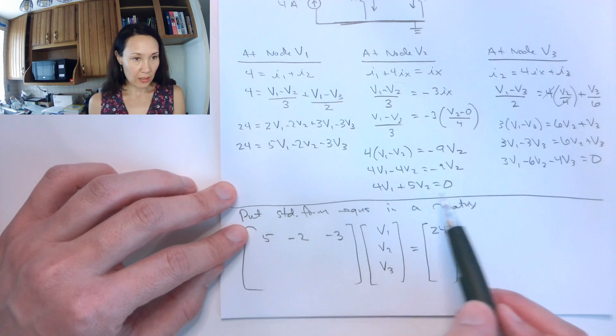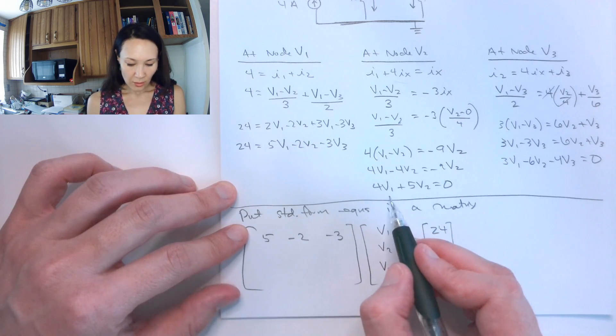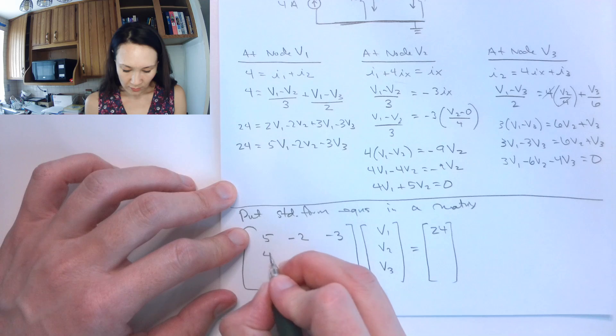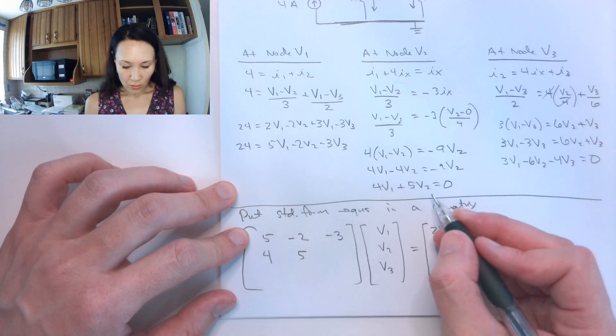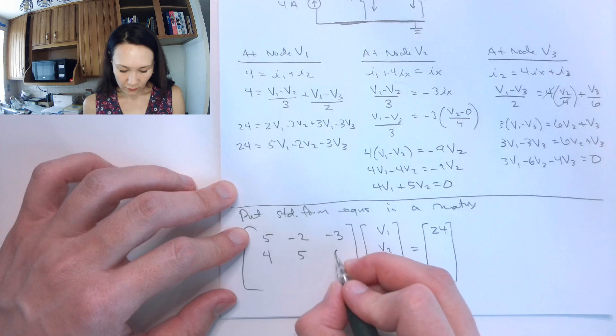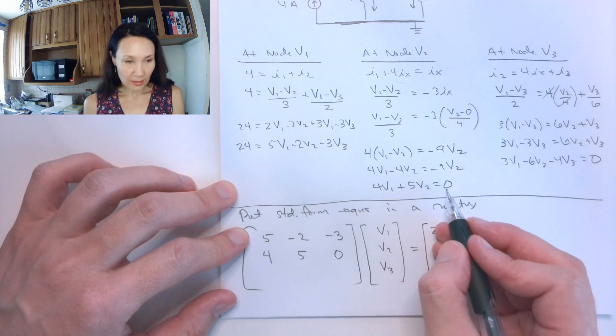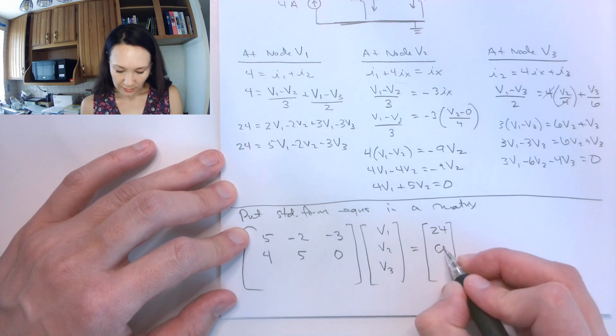Now I'm going to put the second equation into my matrix. The coefficient in front of the V1 is 4. The coefficient in front of the V2 is 5. There's no V3, so therefore the coefficient is 0. And this is equal to 0, so that means I put this 0 over here.